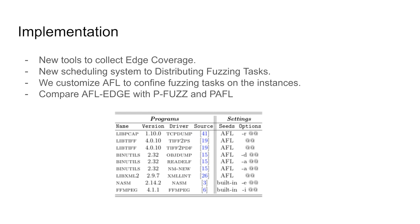We have implemented our solution called AFL-EDGE on top of AFL and LLVM. We created new tools to collect the edge coverage, a new scheduling system to distribute the fuzzing tasks. We also customized AFL to confine the fuzzing task on the instance. We prepared a group of nine real-world benchmark programs. Details about the programs are presented in this table. We run the vanilla AFL as the baseline of our evaluation. To compare AFL-EDGE with existing solutions, we also run PFAS and PAFL on top of AFL.